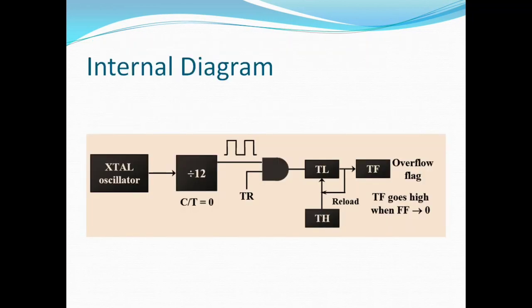This is the internal diagram. The crystal oscillator frequency is internally divided by 12, and when the TR bit is set, then the timer starts incrementing. When it overflows from FFH to 00, the TF value which is loaded in the TH register will be immediately copied into the TL register after the overflow.